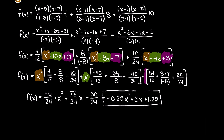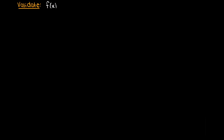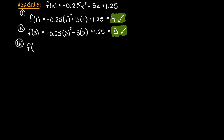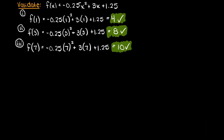We have minus 0.25x squared plus 3x plus 1.25. Now if you want, you can actually do a quick check by plugging our x terms into our Lagrange polynomial. Remember, when developing these interpolating functions, it needs to pass through every given data point. Therefore, by plugging in our x terms, we should get our y term back. As you can see, we are returned our outputs as we expected.